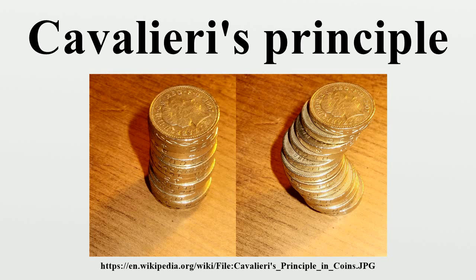The napkin ring problem: In what is called the napkin ring problem, one shows by Cavalieri's principle that when a hole of length h is drilled straight through the center of a sphere, the volume of the remaining material surprisingly does not depend on the size of the sphere. The cross-section of the remaining ring is a plane annulus, whose area is the difference between the areas of two circles.